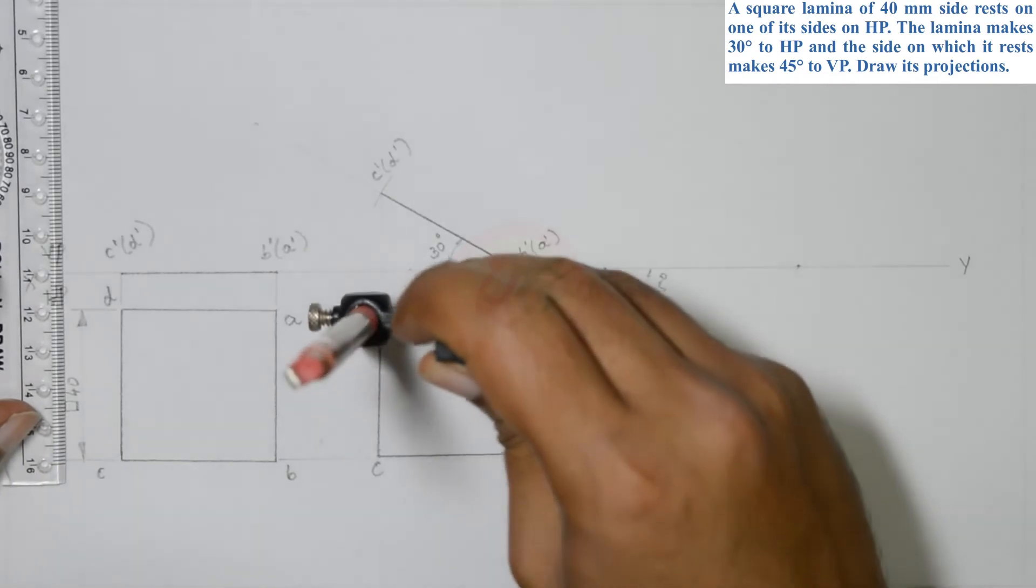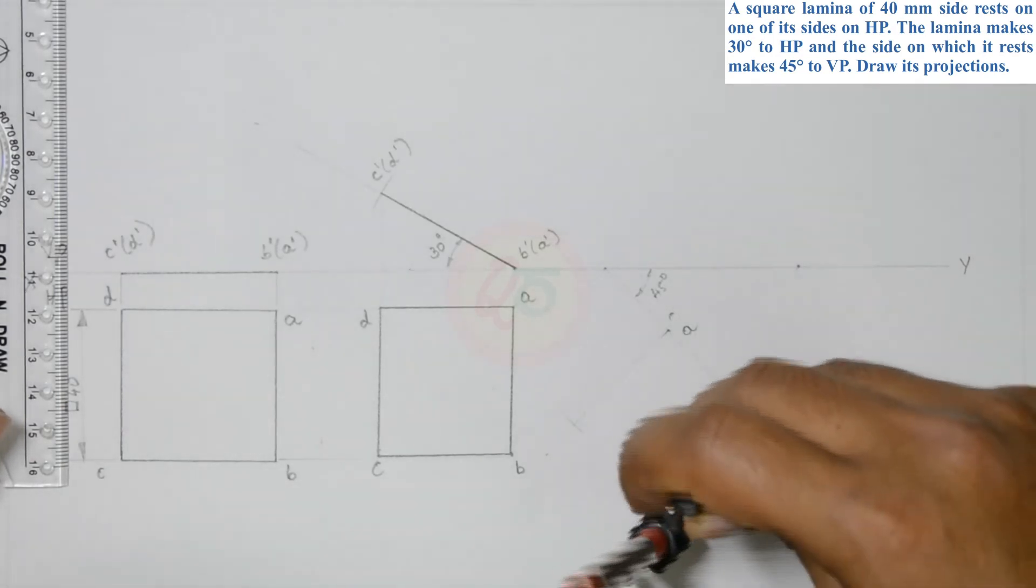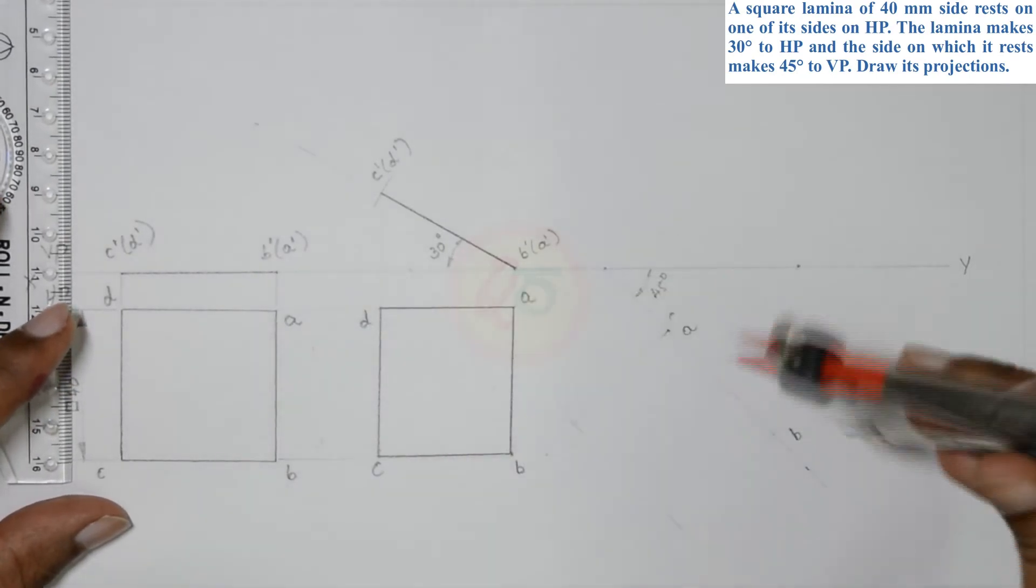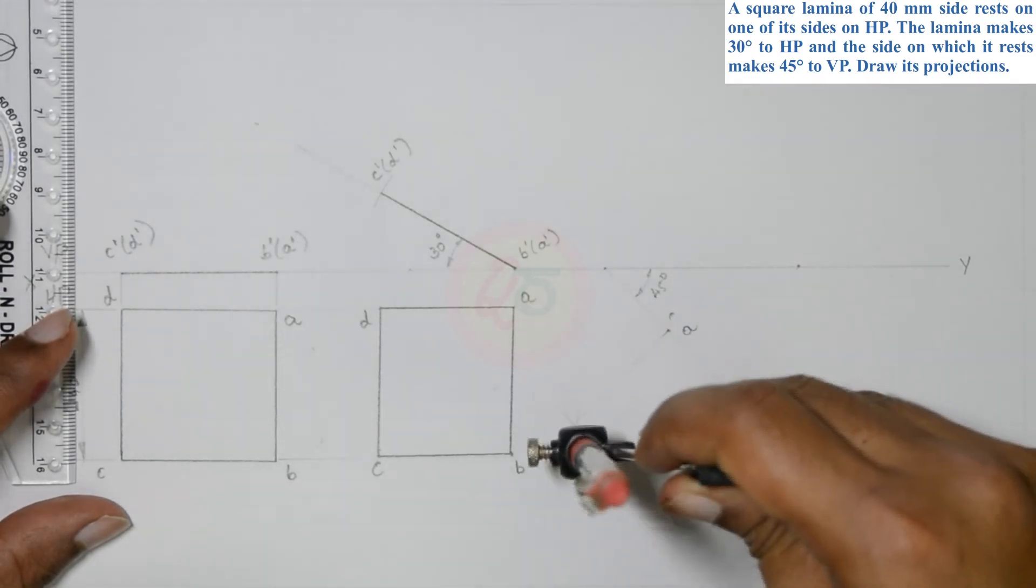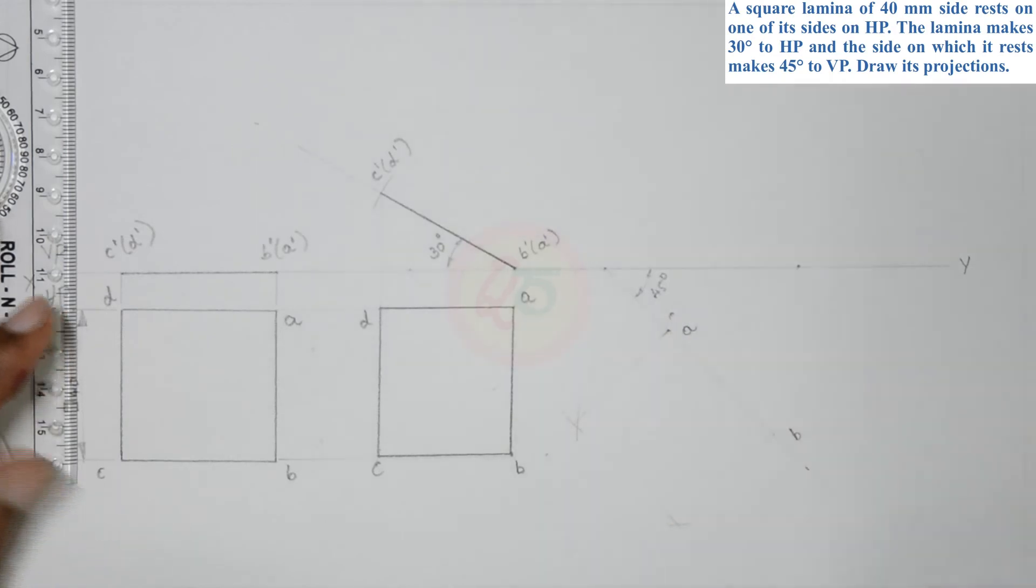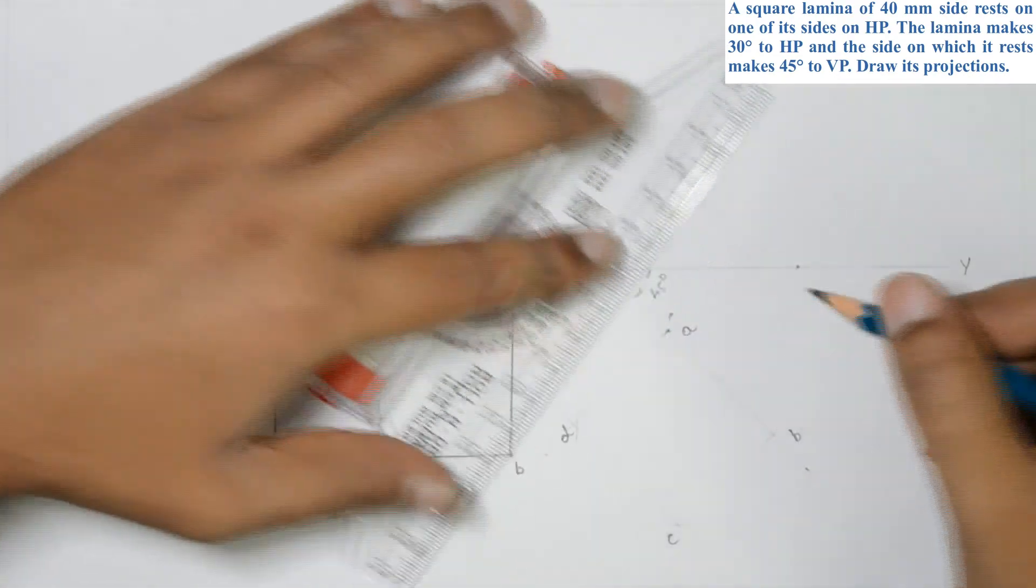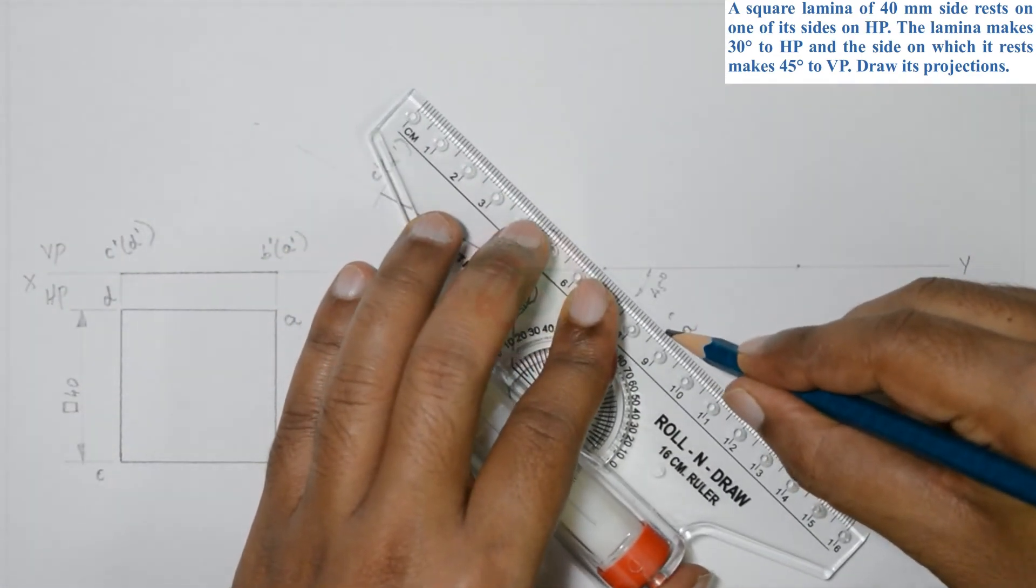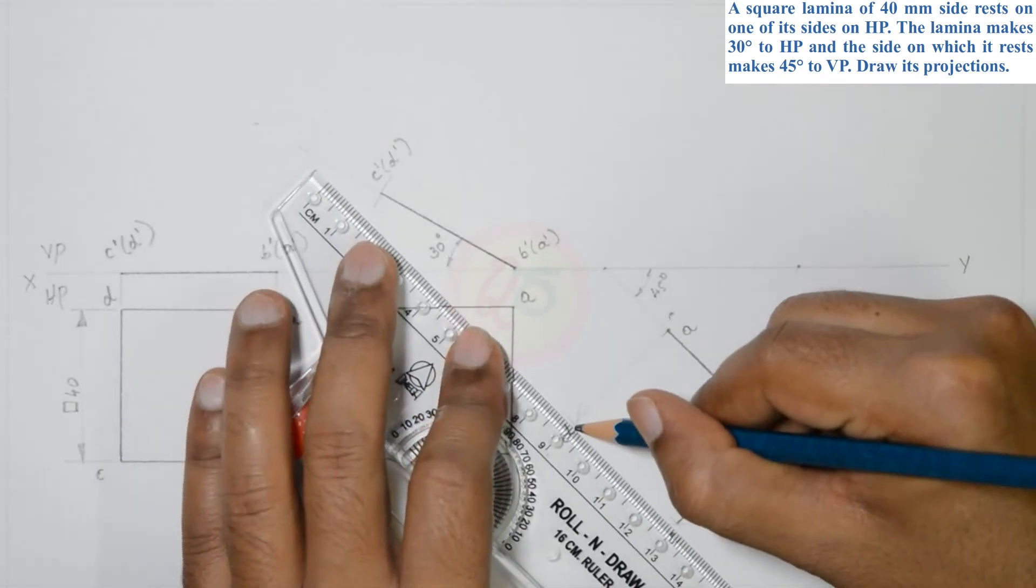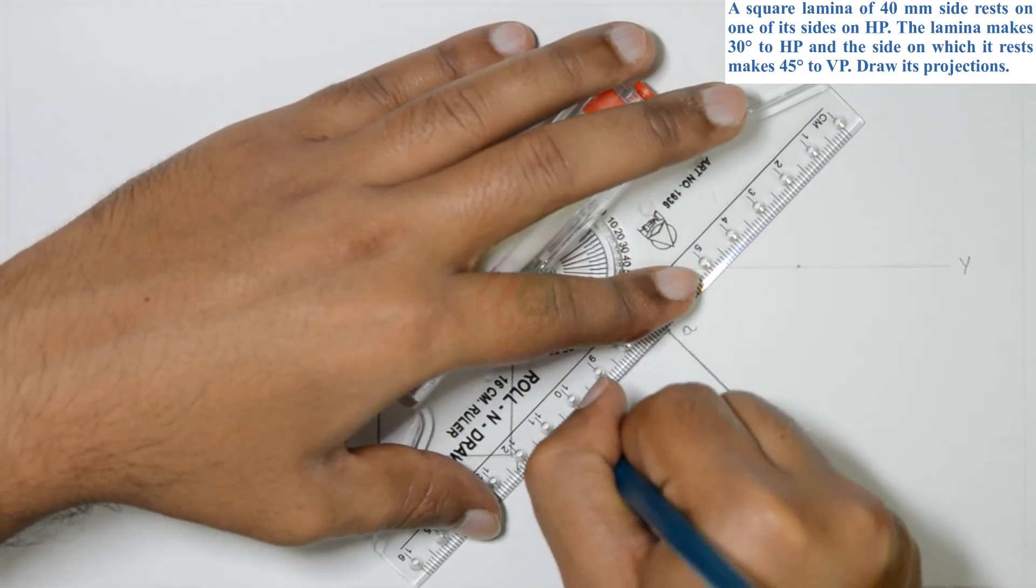So, from A, measure till D. Similarly, from B, it is the same length. From B to D, take the measurement. Cut an arc. Similarly, the same measurement from A to C. From A to C, cut an arc. The intersection points will be D, C. Join them. A, B. I will draw on first. From B to C. From C to D. And from D to A.